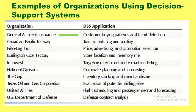Examples of organizations using decision support systems: General Accident Insurance uses DSS for finding customer buying patterns and fraud detection. Canadian Pacific Railway uses DSS for scheduling and routing of trains.